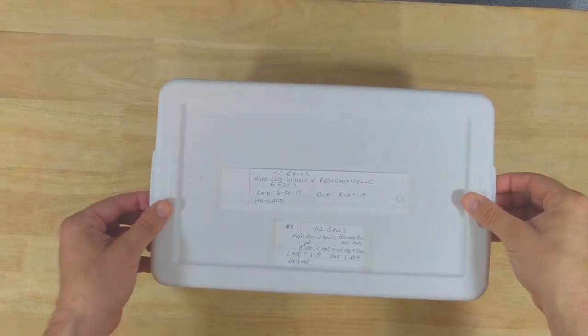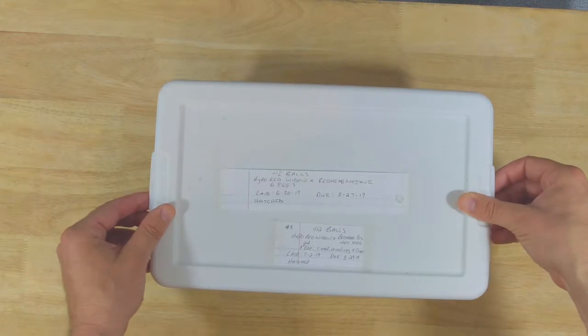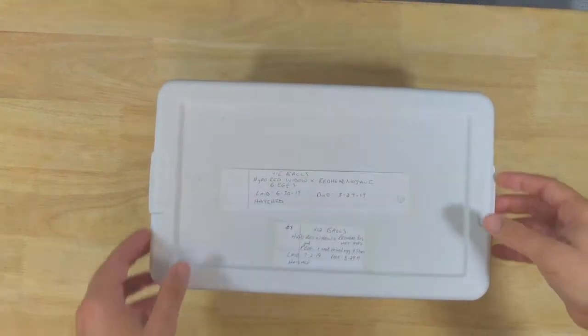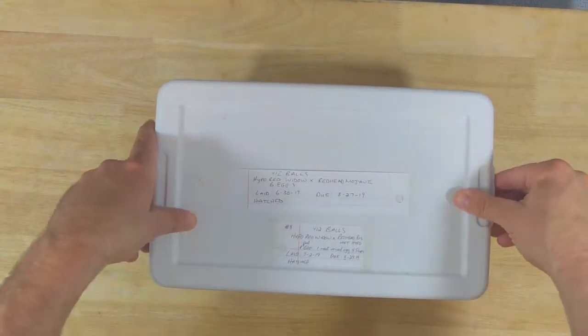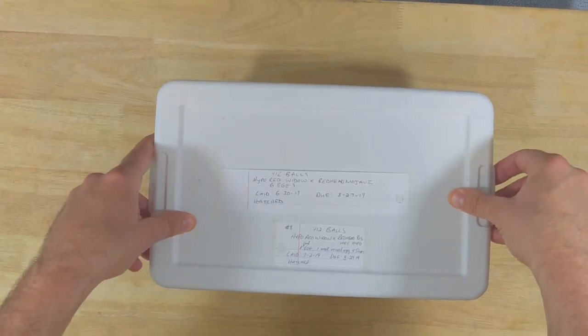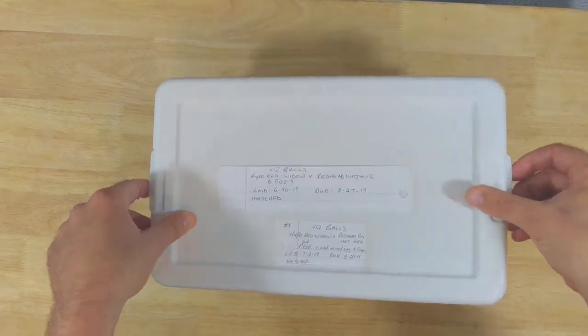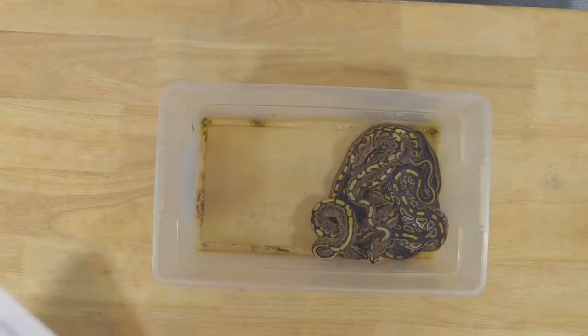I'm going to do a clutch update from my Hypo Red Widow to my Redhead Mojave Het Hypo. Unfortunately, no hypos out of this one. Last year I did hit a hypo. I had three eggs last year out of this same pairing. Hit a hypo, but this year out of six eggs, one went bad, but no hypos.